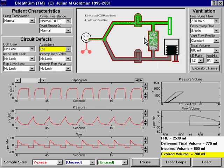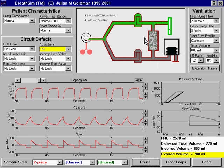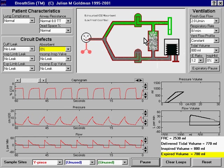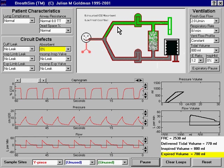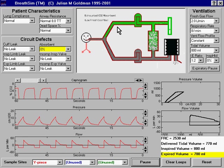now that the CO2 absorbent is exhausted, CO2-containing gas is able to pass through the absorber and arrive at the inspiratory limb where it is re-breathed at the next breath.